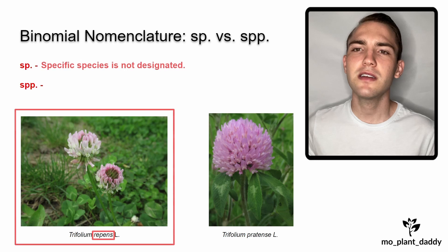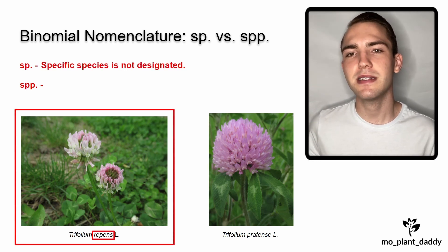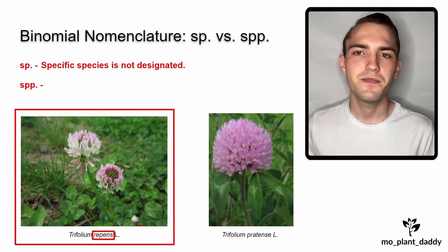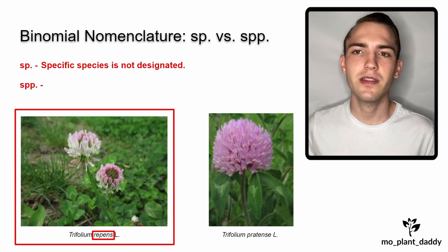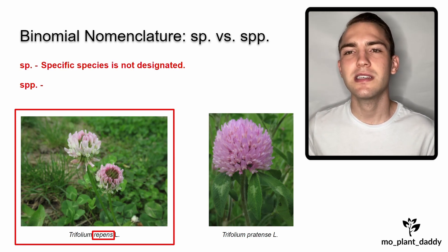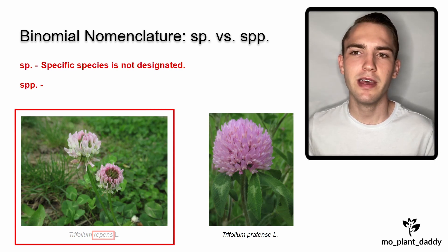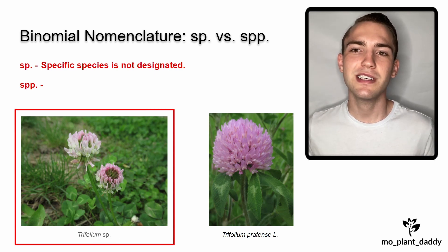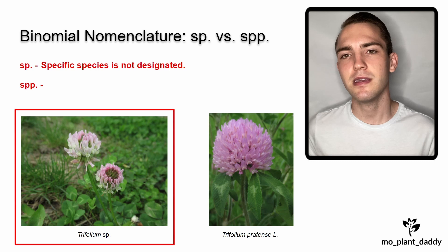Let's start with SP, which is used when the specific species is not designated. For instance, if we looked at just Trifolium repens and knew that it was a Trifolium but we didn't know its specific epithet, we would just say Trifolium sp.